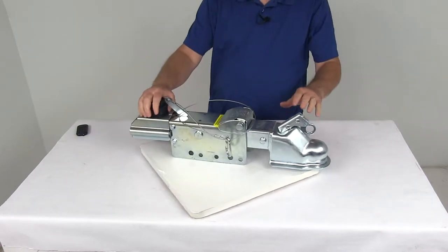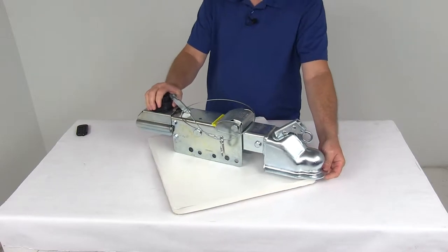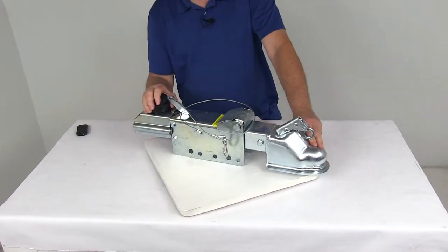Today we're going to take a look at the Titan zinc plated bolt-on disc brake actuator designed to fit a two and five sixteenths diameter hitch ball, has an 8,000 pound weight capacity.